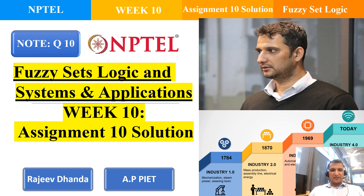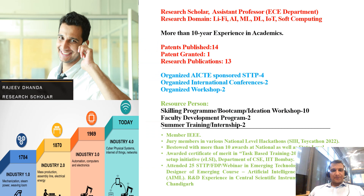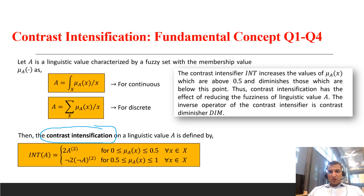Hello everyone, today I will discuss Assignment 10 for the course Fuzzy Set Logic and System and Application. In this assignment, question numbers 1, 2, and 4 are of similar type. In questions 1, 2, and 4, what we have to find out is contrast intensification.